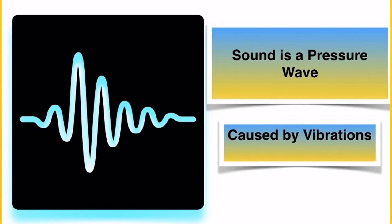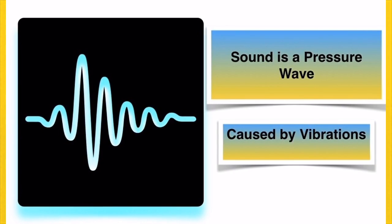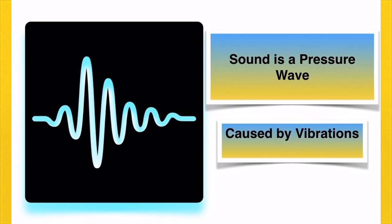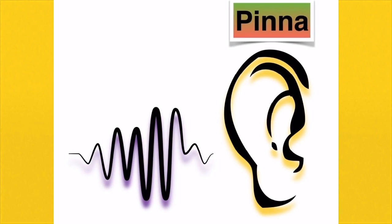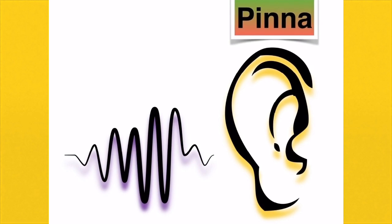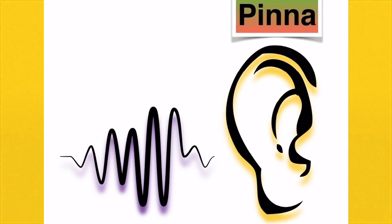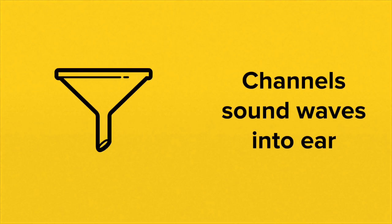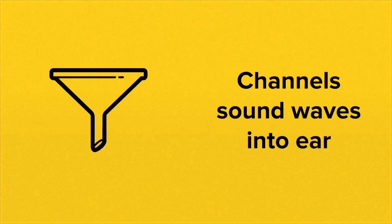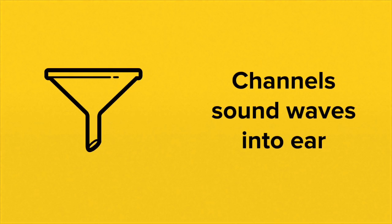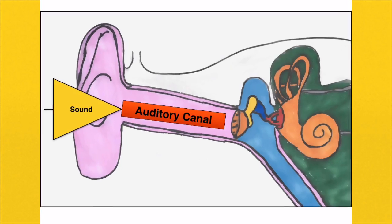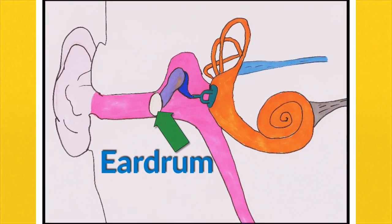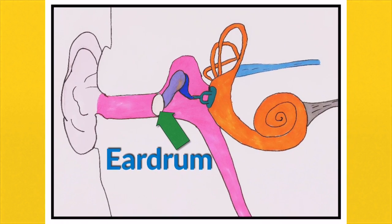To understand how the ear works and hearing, you have to know what sound is. Sound is a pressure wave caused by vibrations. Vibrating objects cause these pressure waves which travel towards your ear and enter at the pinna. The pinna is made of cartilage and works as a funnel, channelling sound waves down the auditory canal where they hit the eardrum — a thin membrane — causing it to vibrate.